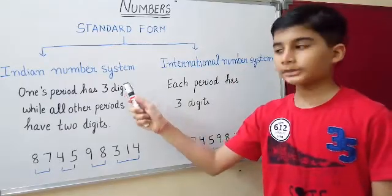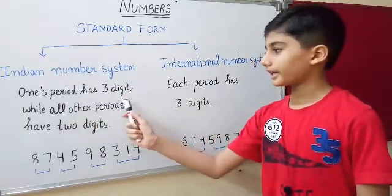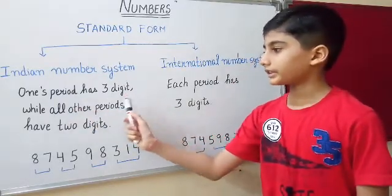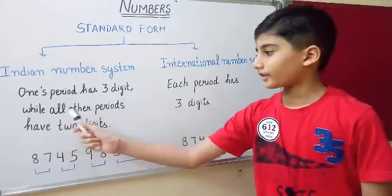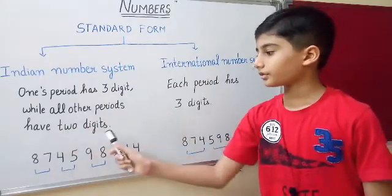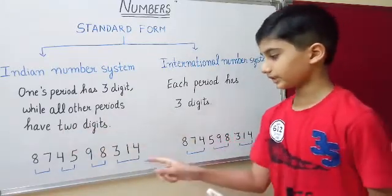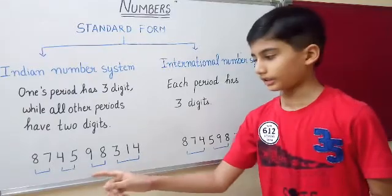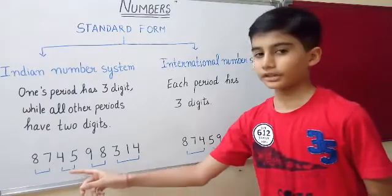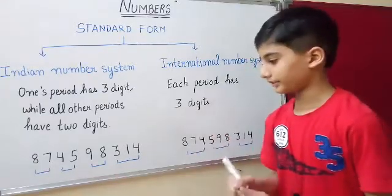In the Indian number system, the ones period has three digits, while all other periods have two digits — three digits, two digits, two digits, two digits.